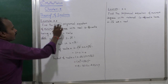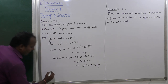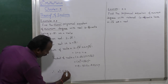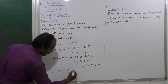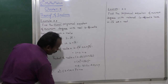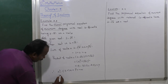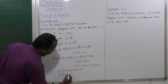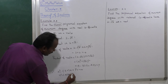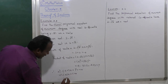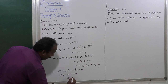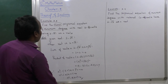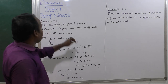The monic polynomial formula is: x squared minus (sum of roots) times x plus (product of roots) equals 0. Substituting the sum of roots as 4 and the product of roots as 7, we get x squared minus 4x plus 7 equals 0. This is the monic polynomial equation of minimum degree.